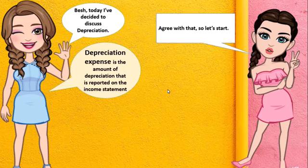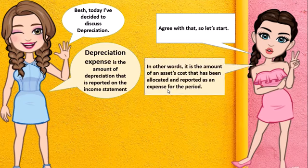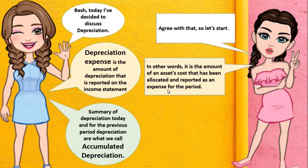Depreciation Expense is the amount of depreciation that is reported on the income statement. In other words, it is the amount of an asset's cost that has been allocated and reported as an expense for the period. The summary of depreciation today and for the previous period are what we call Accumulated Depreciation.